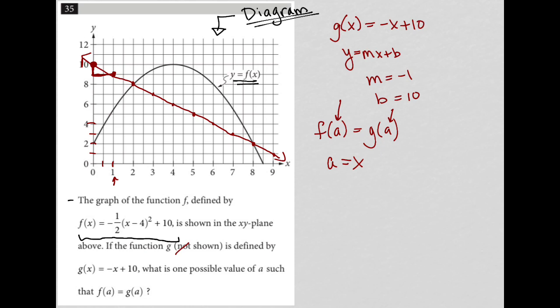So where do we have this happening? Where is our f function equal to our g function? Well, that's wherever we have an intersection, which is happening here and it is happening here.